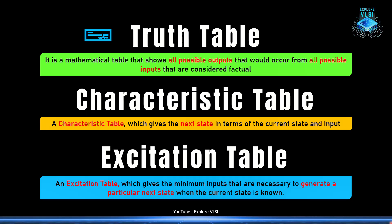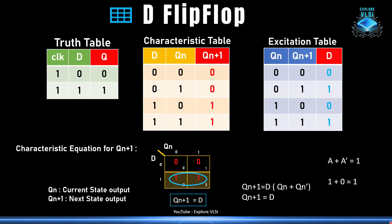We also need to write the characteristic equation, which gives us the exact expression for implementing any flip-flop. The first is the D flip-flop. Recalling its truth table: this D flip-flop operates on a positive edge clock. When D is 0, Q will also be 0. When D is 1, Q is also 1. Whenever the positive edge of the clock comes, whatever is at D will appear at Q.